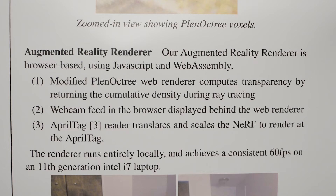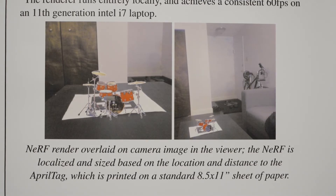The augmented reality renderer is browser-based, using JavaScript and WebAssembly. The modified Plenoctree web renderer computes transparency by returning the cumulative density during ray tracing. The webcam feeds into the browser displaying behind the web renderer. This is made possible using the ARuco tag, which is a fiducial marker used for computer vision purposes. As you can see in this image, the ARuco tag is a sheet of paper that helps with the localization and size of the object with respect to its distance from the tag.